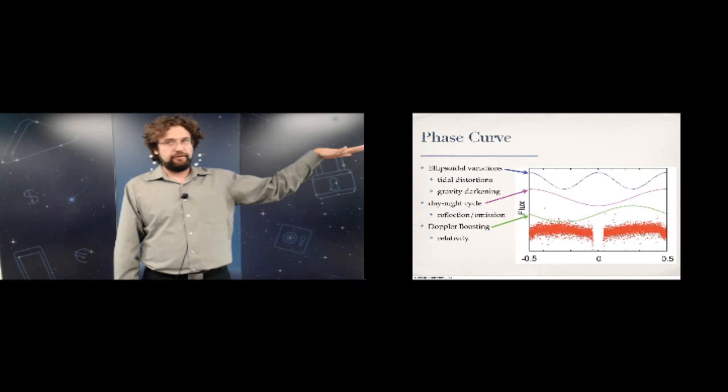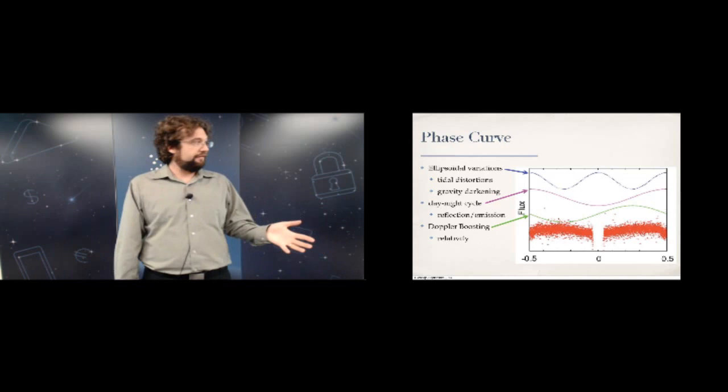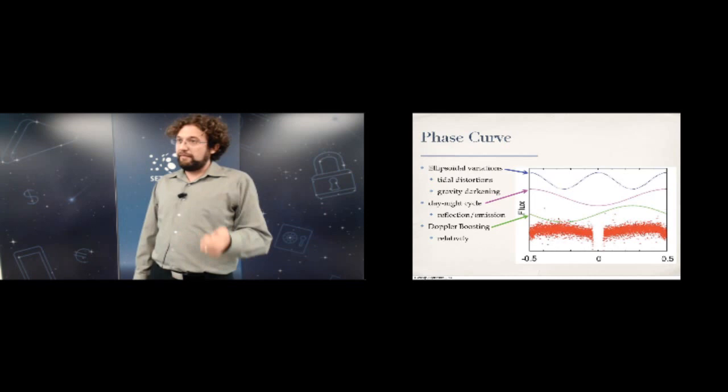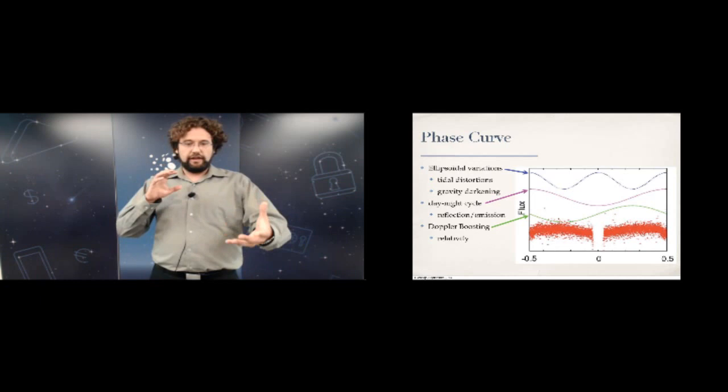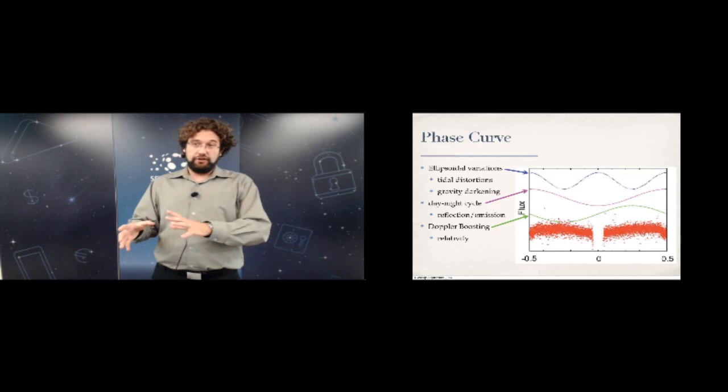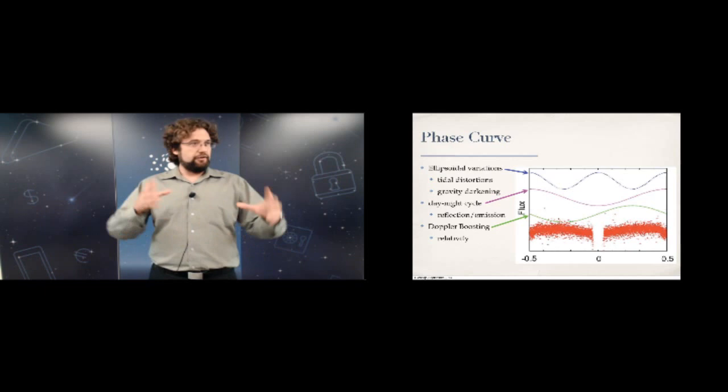There are two other effects visible in phase curves. The first is ellipsoidal variations: a massive planet distorts the star into a football shape. As this shape rotates, gravity darkening changes the surface brightness of the star, making it appear brighter and dimmer at different phases. This appears in the blue curve at twice the orbital period — different from the day-night cycle.